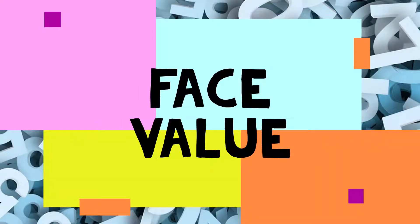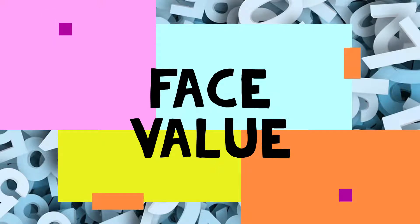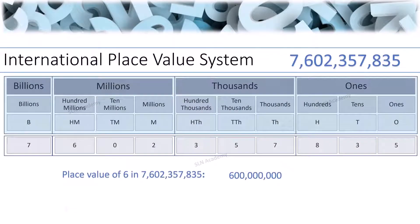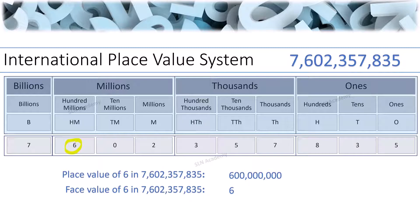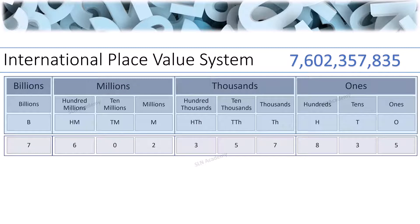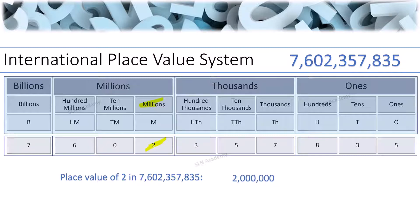Now let us find the place value and face value of any digit. Face value is the actual value of the digit, so the face value of 6 is 6 itself. Now let us see the place value and face value of 2 in the same number. 2 is placed in the Millions position, so the place value of 2 is 2 million, and the face value of 2 is 2 itself.